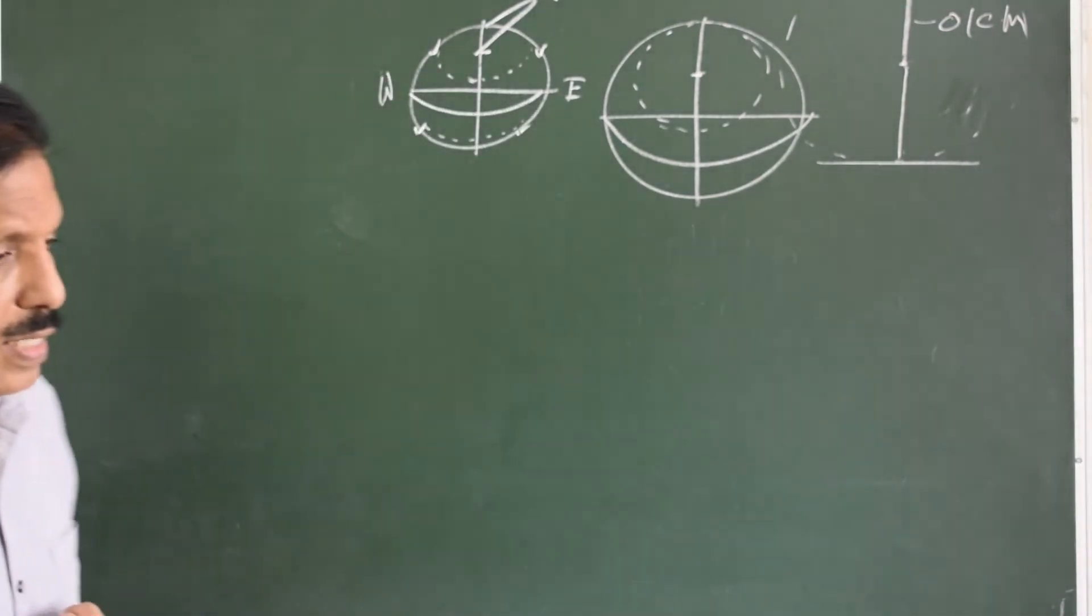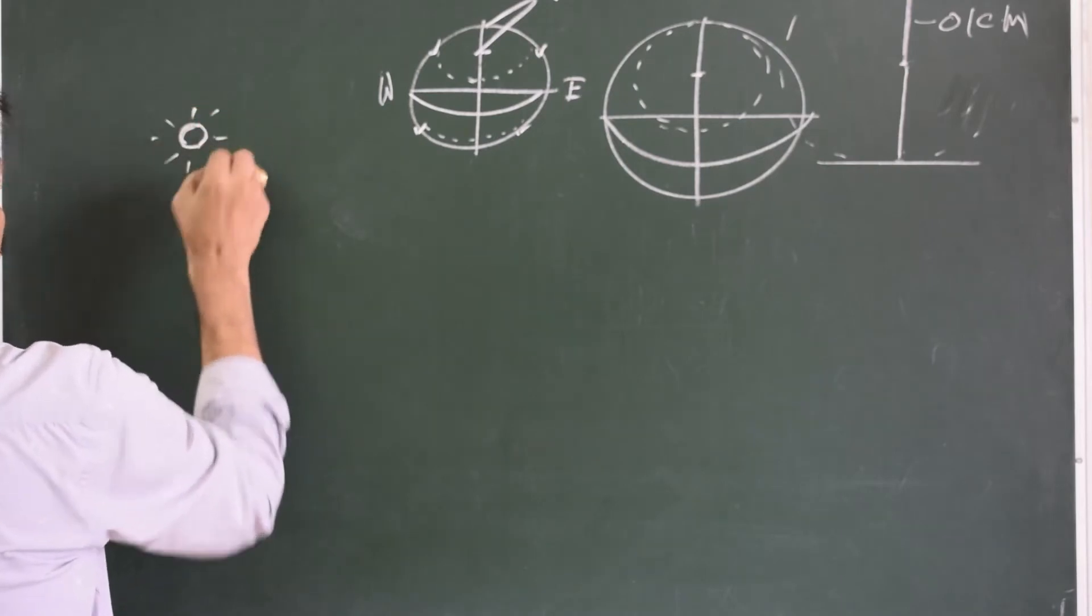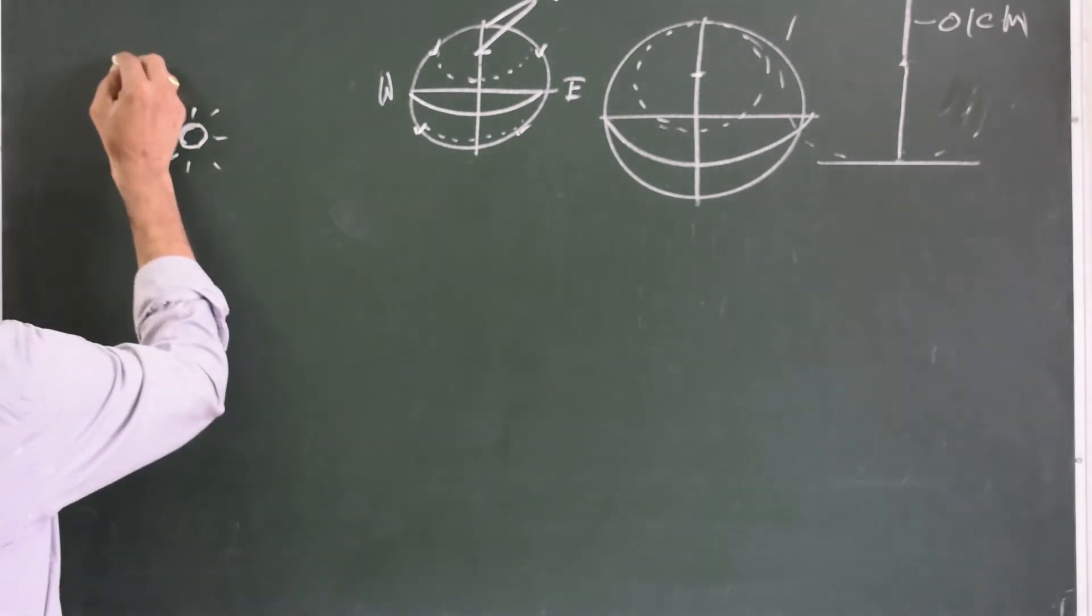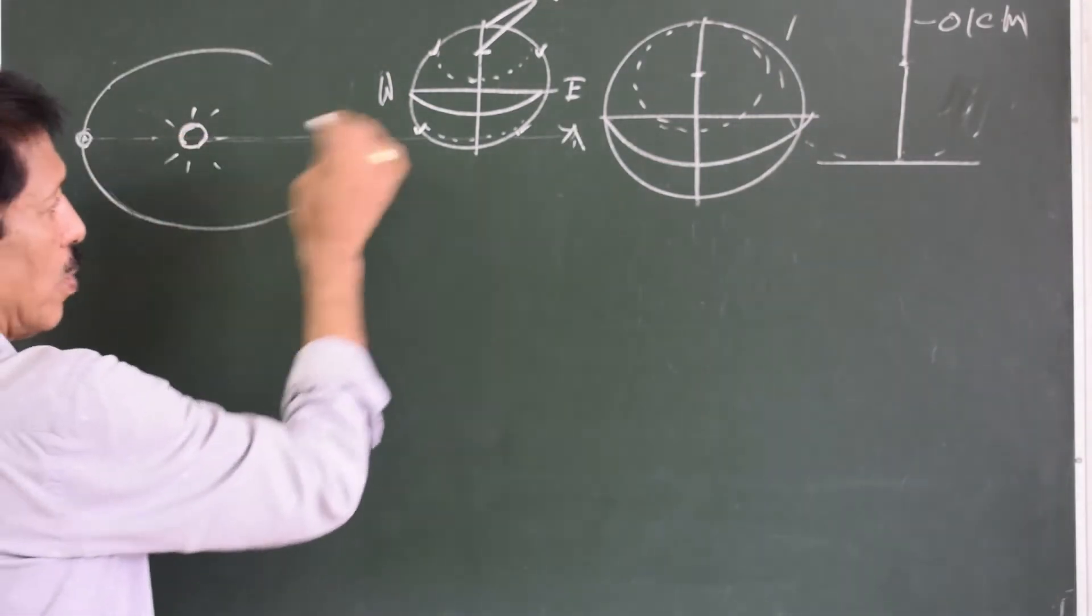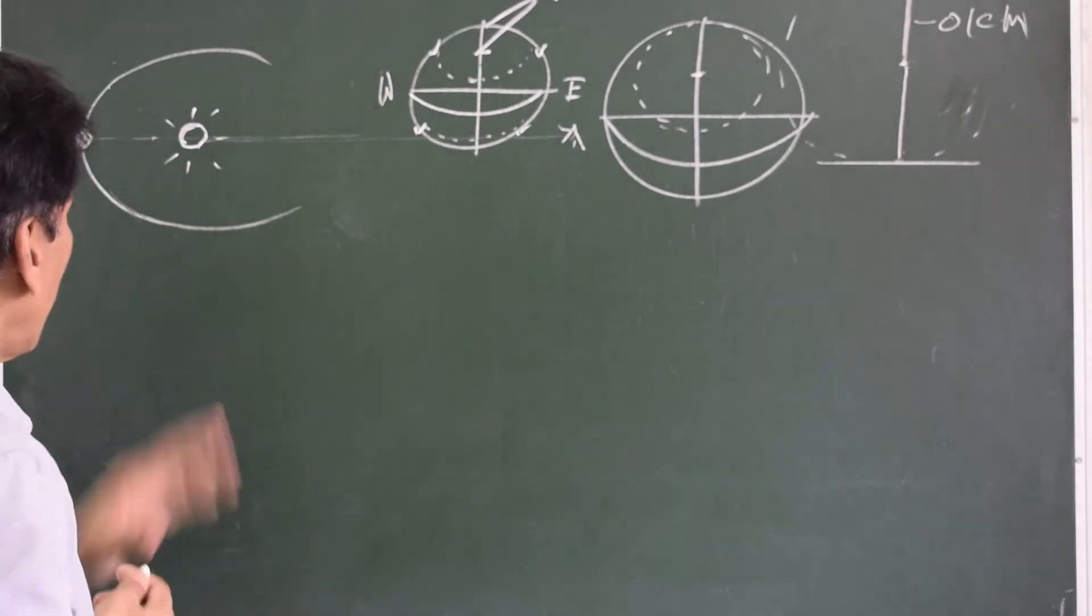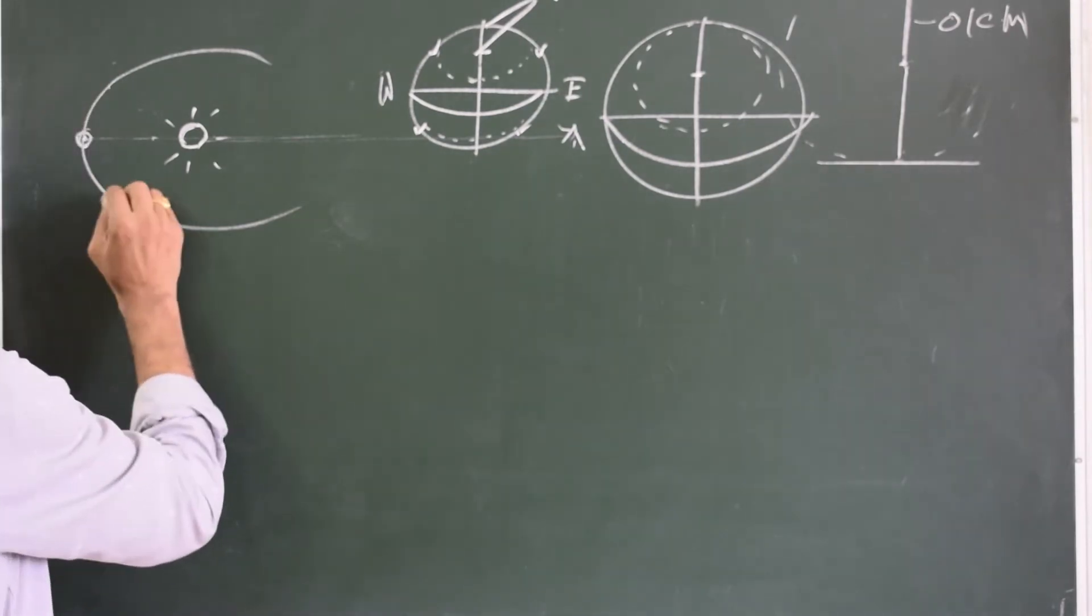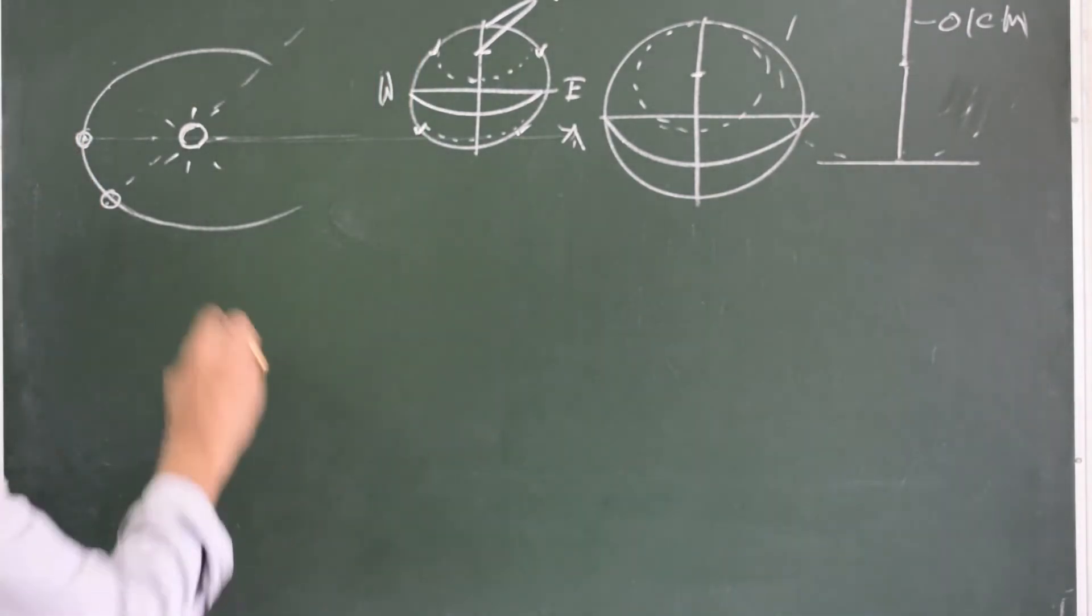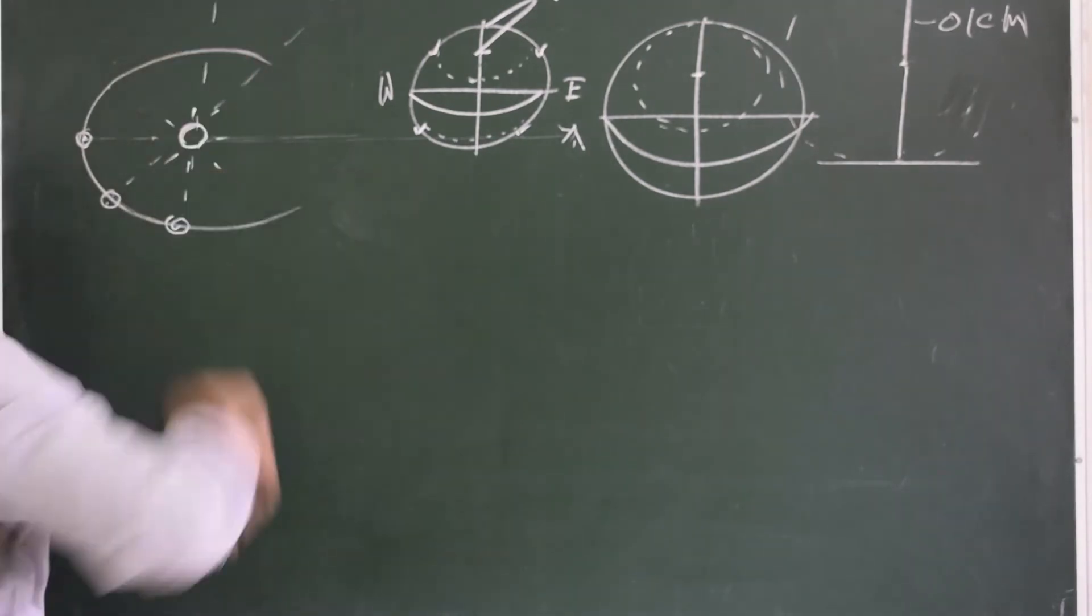Let us see what happens because of the revolution of earth around the sun. For that, let us look at the sun from north of the solar system. Suppose this is the orbit of earth. Now, assume that as you see the sun, you are also able to see the background stars and you will find that the sun is in this constellation. After about one month, when the earth comes here, you find the sun has shifted to another constellation. And then when the earth comes here, you will find that the sun is in the third constellation.